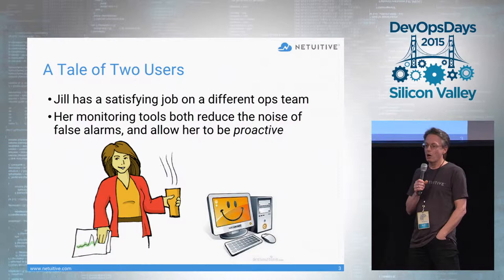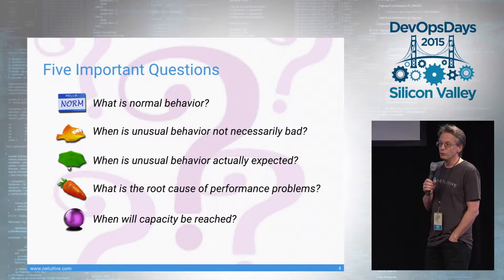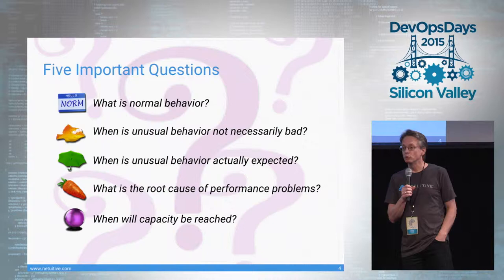There are a few important questions: What is normal? What is unusual but not bad? What is unusual and actually expected? What is the root cause of performance issues? And when will capacity be reached?